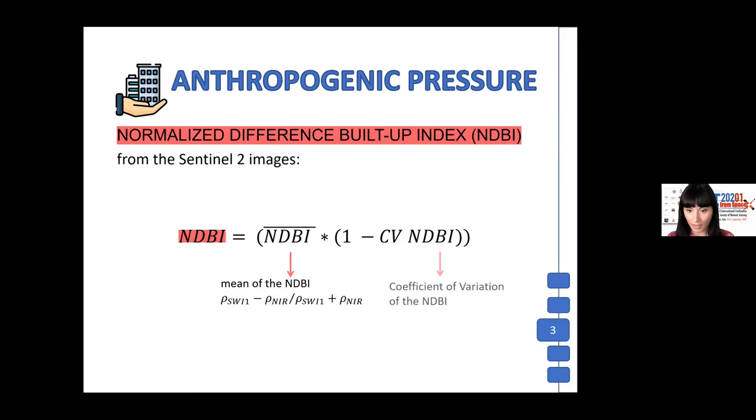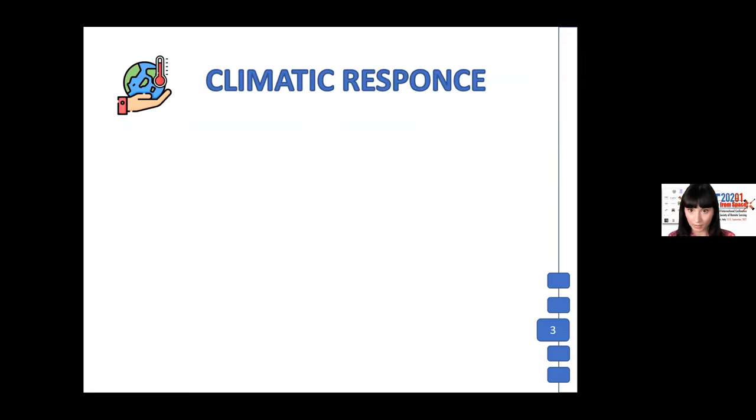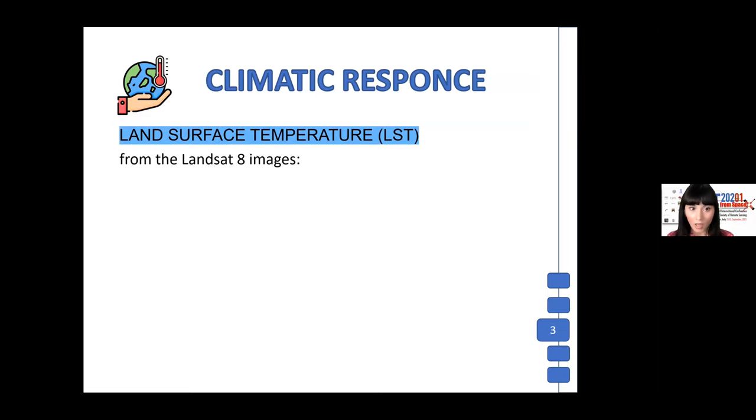In the climatic response, we calculated two different types of indices: the land surface temperature from the Landsat 8 sensor. In this case, we considered brightness temperatures, the wavelength of the emissivity's radiance and the emissivity, and the tasseled cap wetness index.